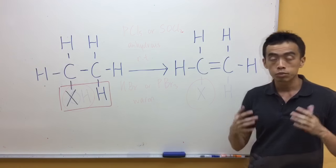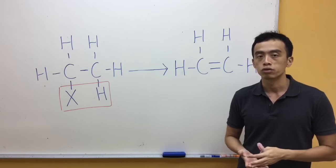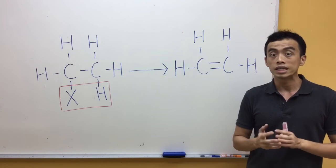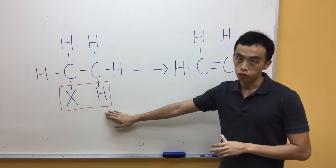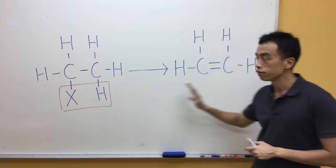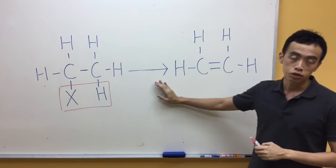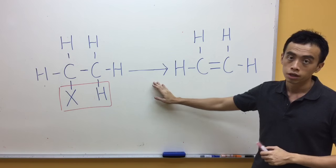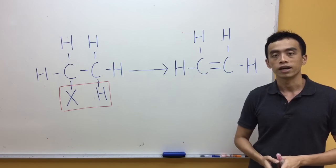Now let us move on to the reactions of haloalkanes — the four reactions. The first one involves the elimination of our HX to give us our alkene. The reagents and conditions for this conversion are KOH in ethanol, reflux.